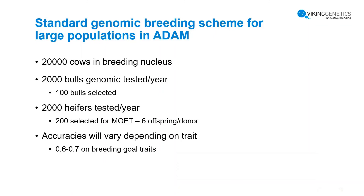With regard to the genomic breeding scheme, we aim to go for a standard large-population breeding scheme that others have found optimal in ADAM with regard to inbreeding. We aim for a breeding nucleus with around 20,000 cows, where 2,000 bulls are genomically tested per year and 100 are selected. On the female side, 2,200 are tested, 200 are selected for embryo transfer, and they produce around six offspring per donor. Accuracies will vary by trait, but on a breeding goal basis around 0.6 to 0.7.